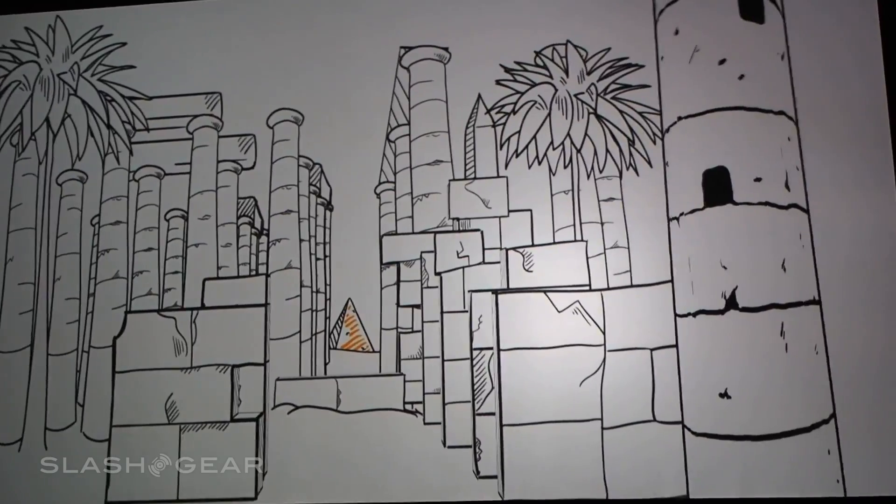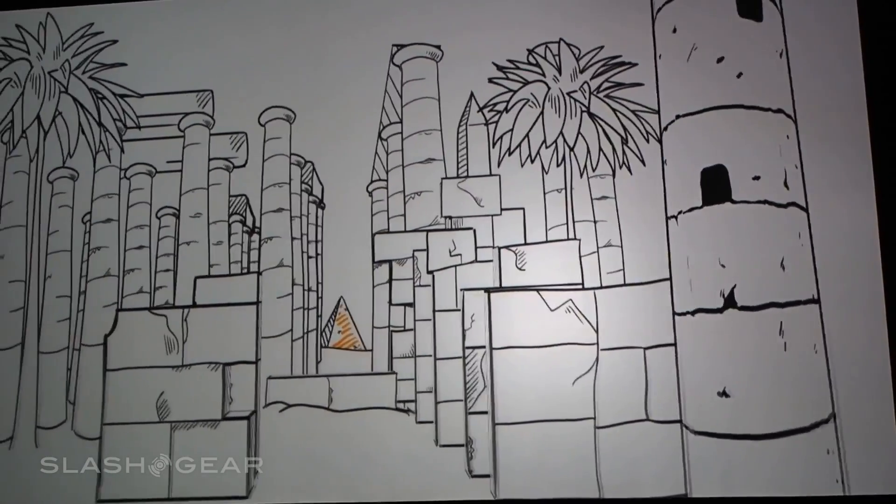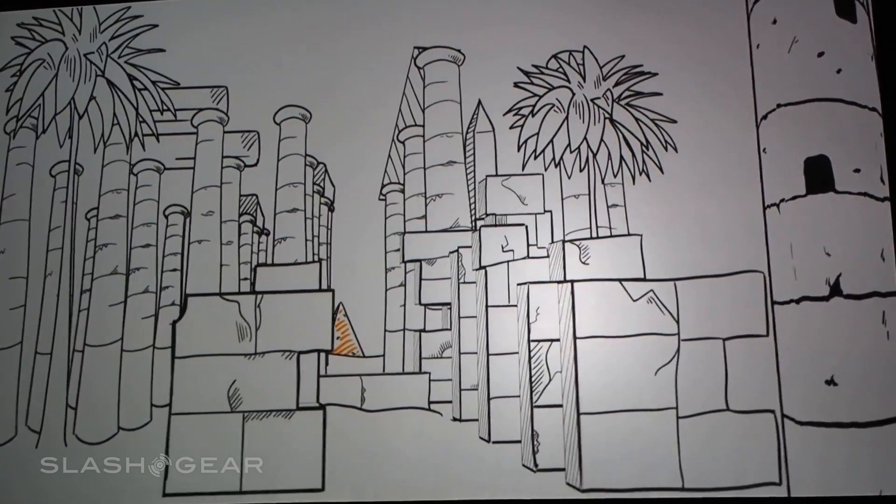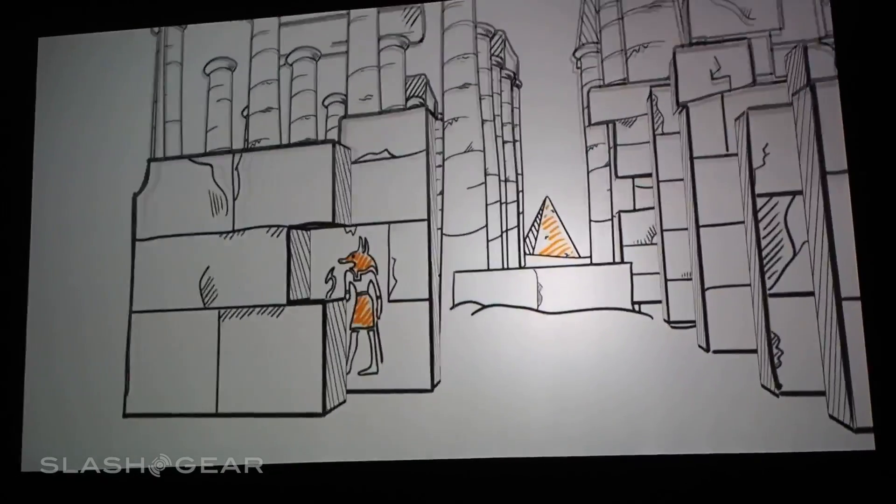If you were to move around the scene, you would notice that it changes with you. The stones in the foreground, for example, move at a faster pace than the pyramid in the background. There is always more to see by changing your perspective.